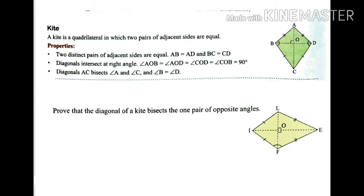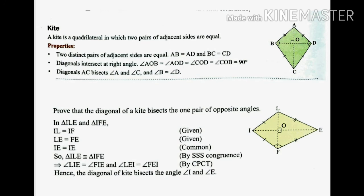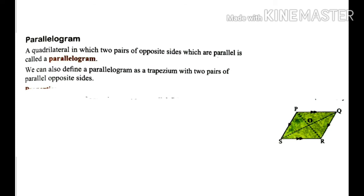Proof that the diagonal of a kite bisects one pair of opposite angles: Given two triangles, first prove congruency. Taking triangles AIE and IFE: IL = IF and F = EL as given, and AI is a common line. By SSS property, these two triangles are congruent. By CPCT (congruent parts of congruent triangles), the diagonal of the kite bisects angles I and E.